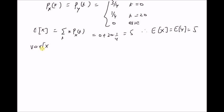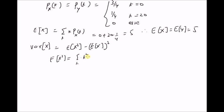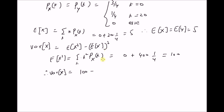Next, we want to find the variance of this random variable X, which is defined as expectation of X squared minus expectation of X, whole squared. Expectation of X squared is equal to summation over all values of k of k squared times the probability mass function, which is equal to 0 plus 400 multiplied by 1/4, which is equal to 100. Therefore, variance of X is equal to 100 minus 5 squared, that is 100 minus 25 is 75. Therefore, variance of X equal to variance of Y is equal to 75.